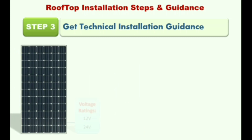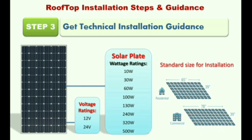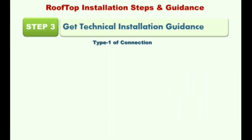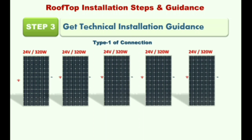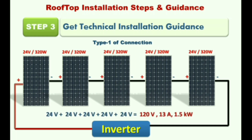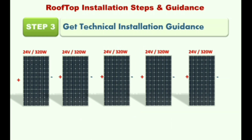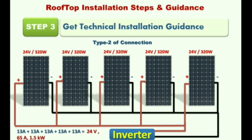Solar panels are also available in different voltage and power ratings, as shown in the images. For panel connections: in a series connection, all plates are connected in series, giving the plant a rating of 120V, 13A, 1.5 kW. In a parallel connection, all plates are connected in parallel, giving an overall plant capacity of 12V, 65A, 1.5 kW.